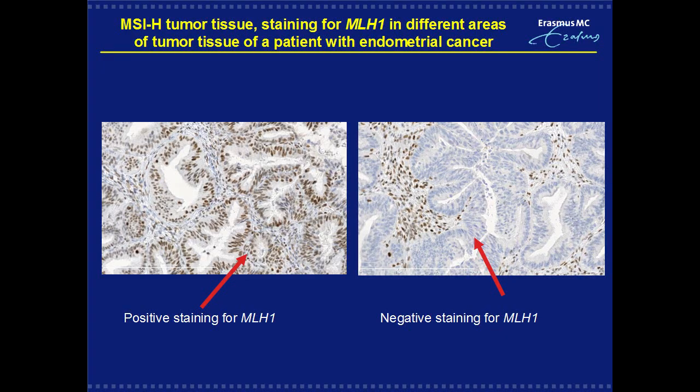Furthermore, heterogeneity of tumor tissue resulted in three other cases in false positive conclusions for immunohistochemical analysis. In one of these cases, different areas of tumor and normal tissue showed absent and present staining for MLH1, as depicted here and indicated by the arrows.